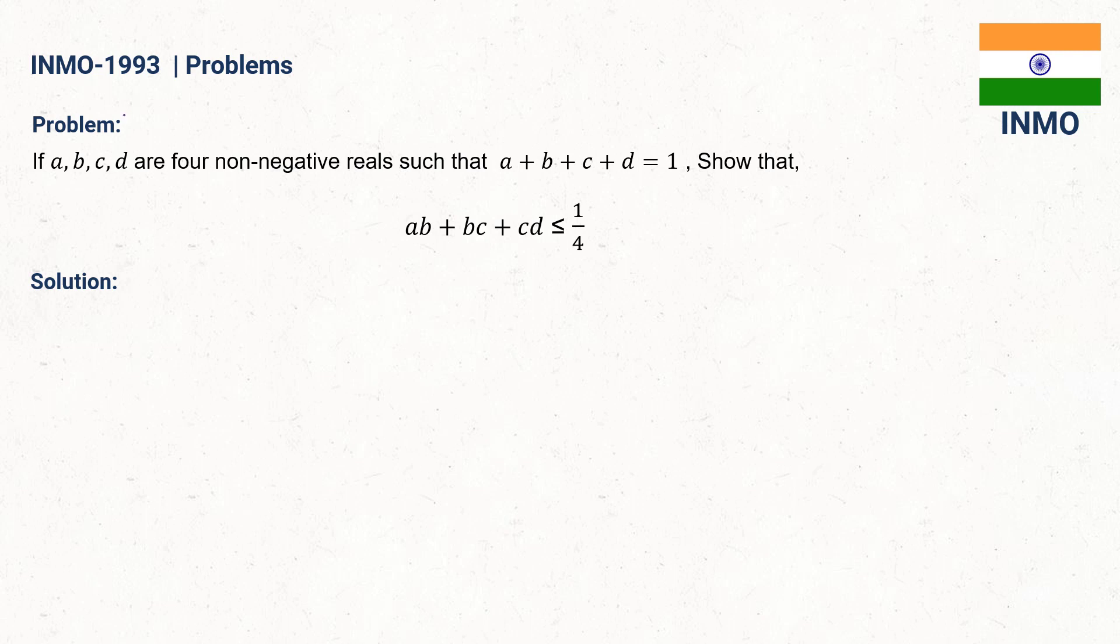Today I have a problem from INMO 1993 and the question is: if A, B, C, D are four non-negative reals such that A plus B plus C plus D equals 1, show that AB plus BC plus CD is less than or equal to 1 by 4.